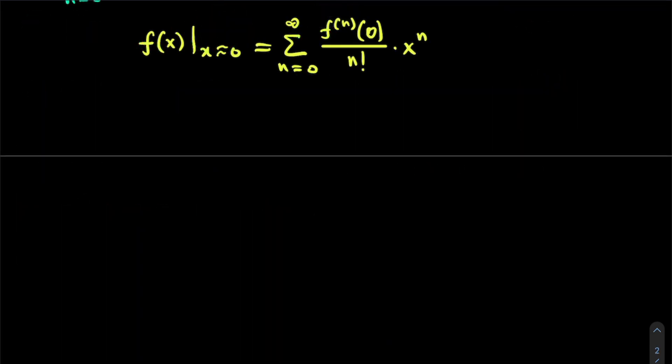So let's see what we get. We get the first term, which is n is equal to 0. It's where we start. So we have the 0th derivative filled in at x is equal to 0, divided by 0 factorial, multiplied by x to the power of 0.